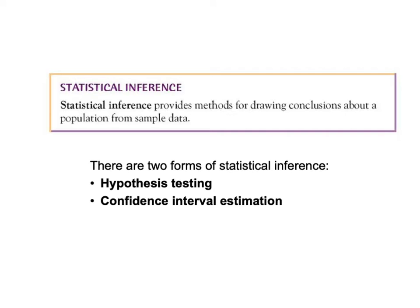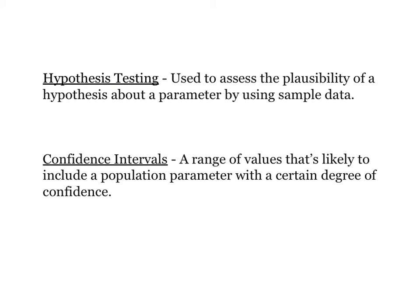Statistical inference provides methods for drawing conclusions about a population from sample data. We collect sample data and try to infer back on the population. There are two forms of statistical inference we're going to study: the first is called hypothesis testing and the other is called confidence interval estimation. These two branches overlap and are very related to one another, and oftentimes we'll be performing both on a set of data.